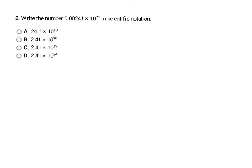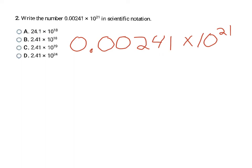This next answer already looks like it's in scientific notation. However, the number on the front isn't greater than or equal to 1 but less than 10, so I need to continue moving the decimal. I rewrote the number to make it easier to see — the decimal needs to go between the 2 and the 4, since 2.41 satisfies the condition. I moved it 1, 2, 3 times, and since this is a small number I'd normally use a negative exponent, but instead I subtract 3 from the existing exponent: 21 minus 3 is 18. So my final answer is B.